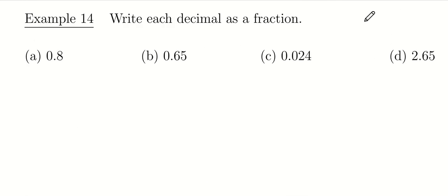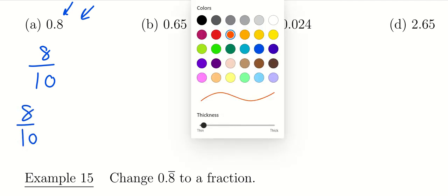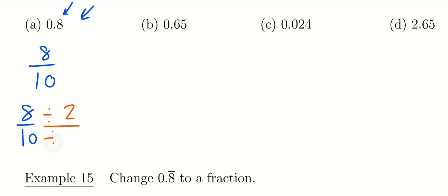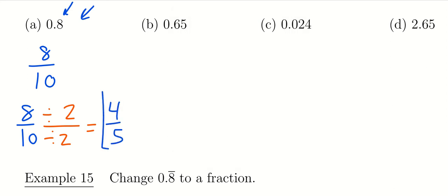In example 14, we write each decimal as a fraction. For 0.8, which is 8 tenths, we throw away the decimal point and get 8, placed over 10. So 0.8 is 8/10. However, we need to reduce this. The GCF of 8 and 10 is 2, so we divide top and bottom by 2 to get 4/5. So 0.8 as a fraction is 4/5.